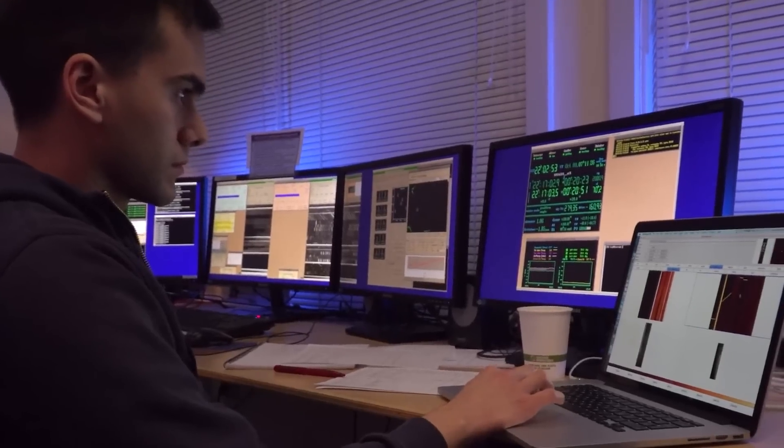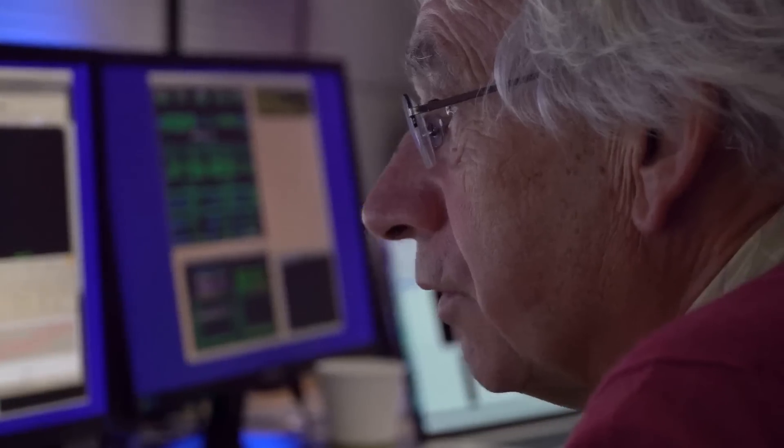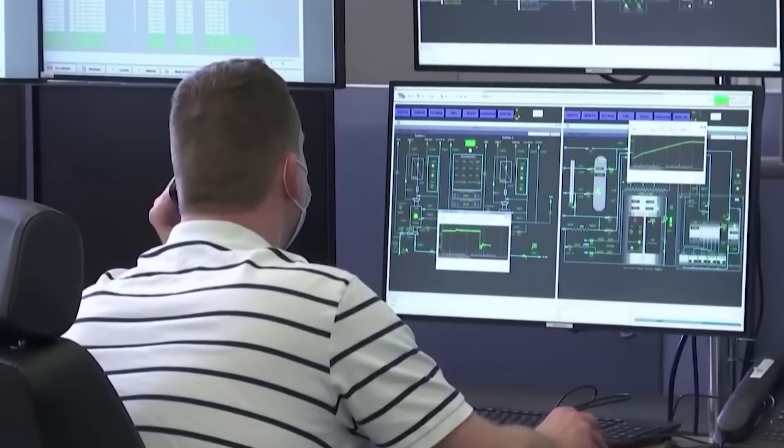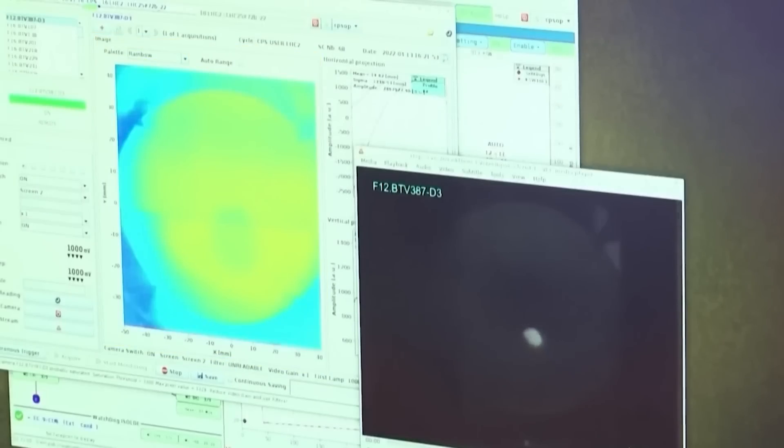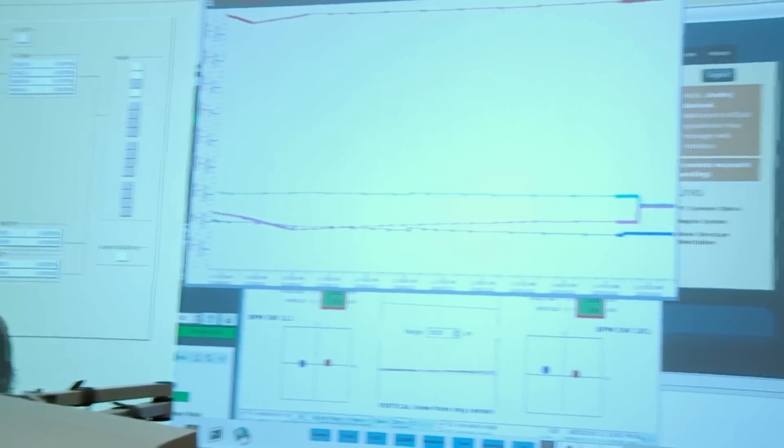This process involves two steps, online and offline analysis. During online analysis, the detector records data, which is then read by fast electronics and computers, and only a selected portion of events is stored.